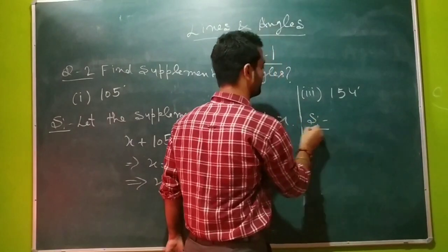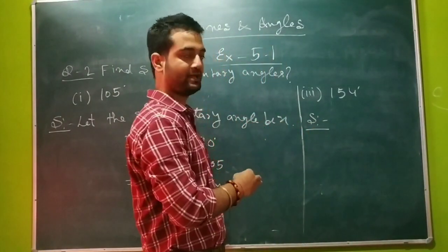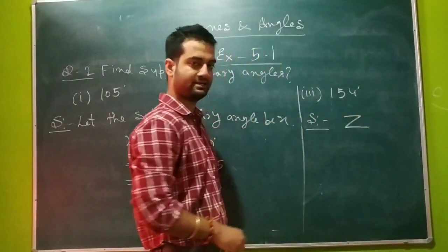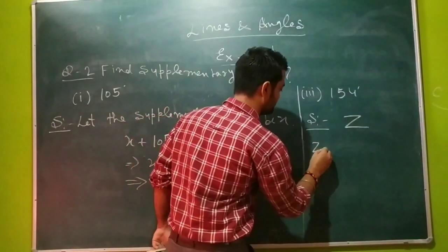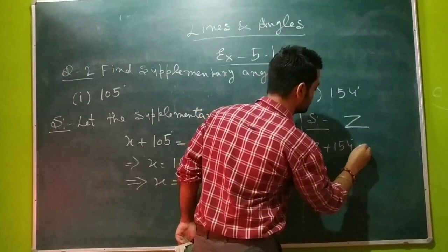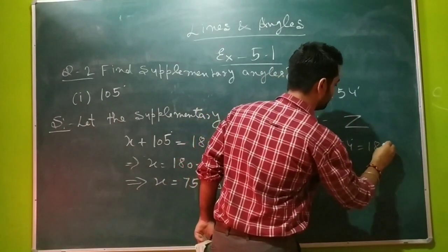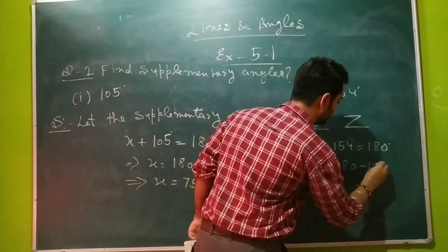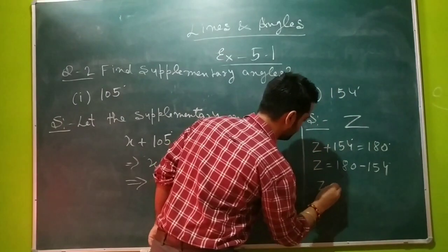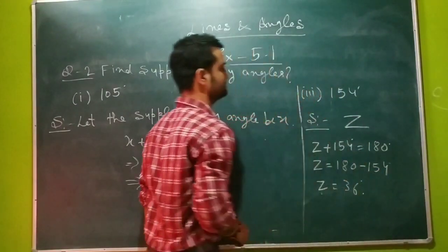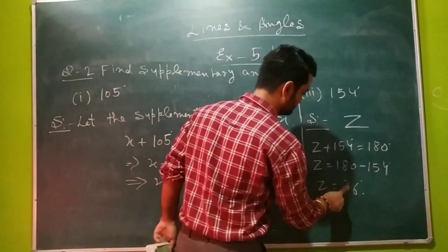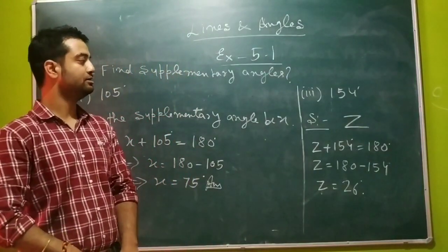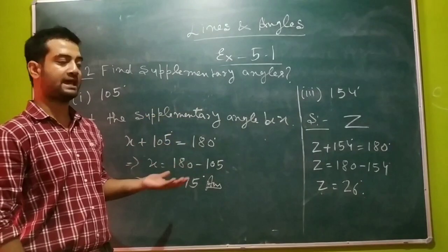Let's find out. When we are talking about the supplement of any angle, firstly suppose that its supplementary angle is z. Now we will form the equation: z plus 154 degrees equals 180 degrees. So z equals 180 minus 154, which gives us 26 degrees. Hope you have understood how to solve the first and second questions.